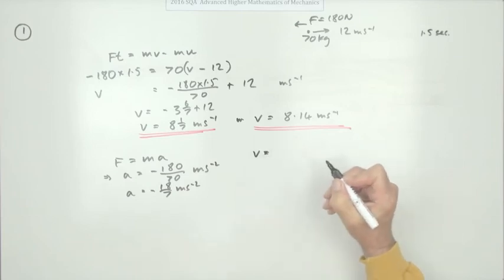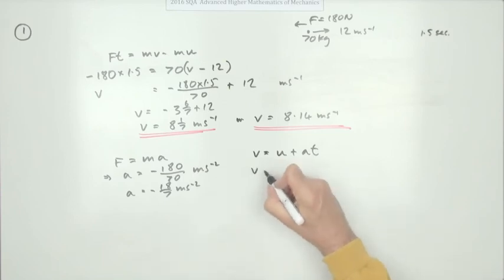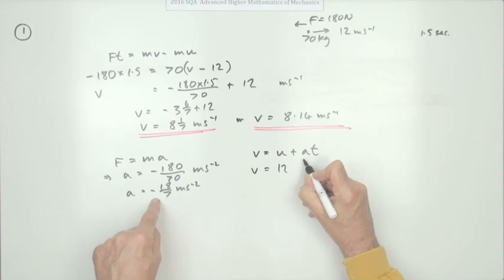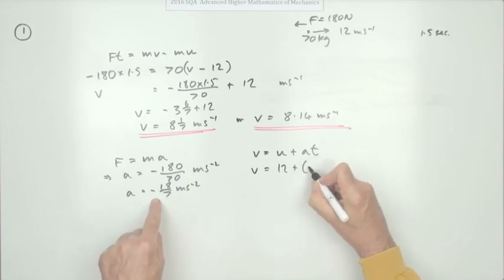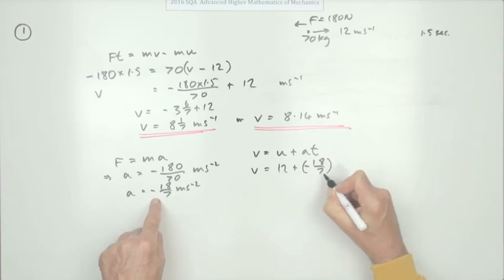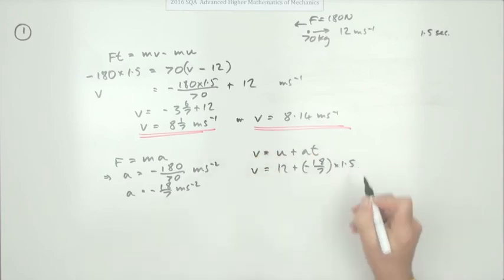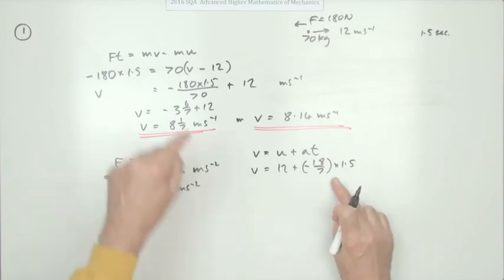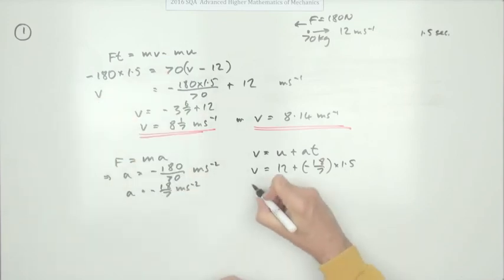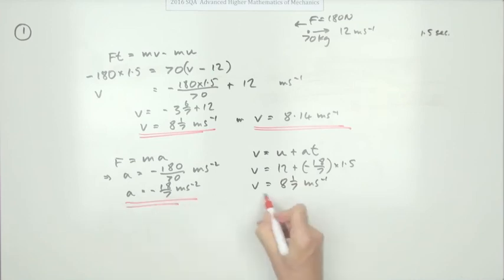And then just do v equals u plus at to get the final velocity. So v will be the initial velocity was 12, the acceleration is negative of course because that's a braking effect, a deceleration, so it'll be plus negative 18 upon 7 times the time took which is 1.5, which is of course exactly the same calculation as this. So you get out the answer eight and one seventh meters per second or the decimal form.